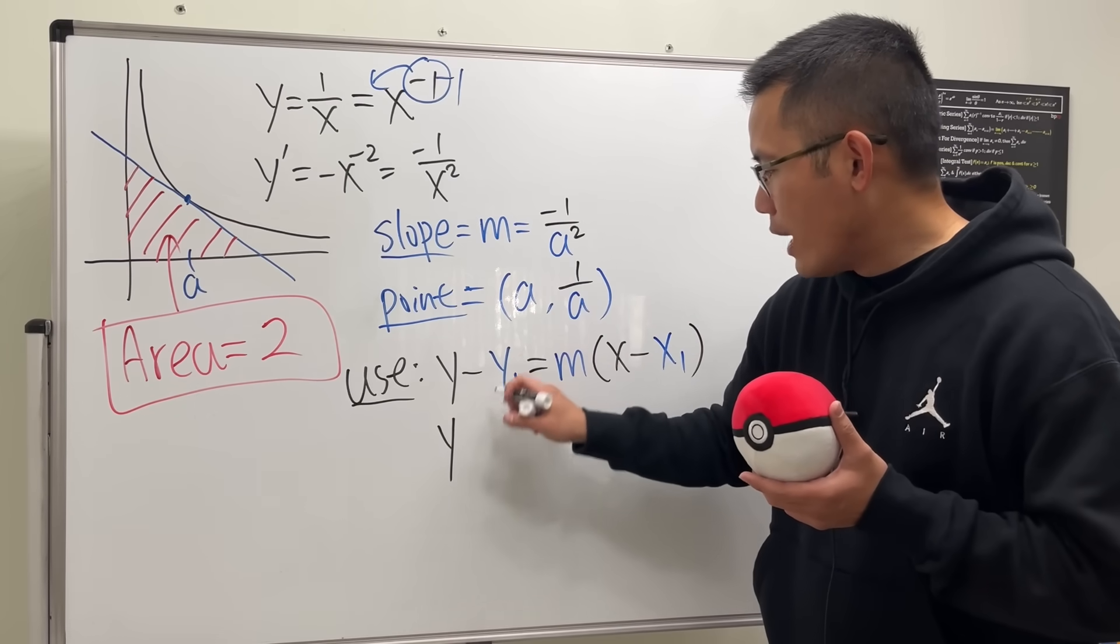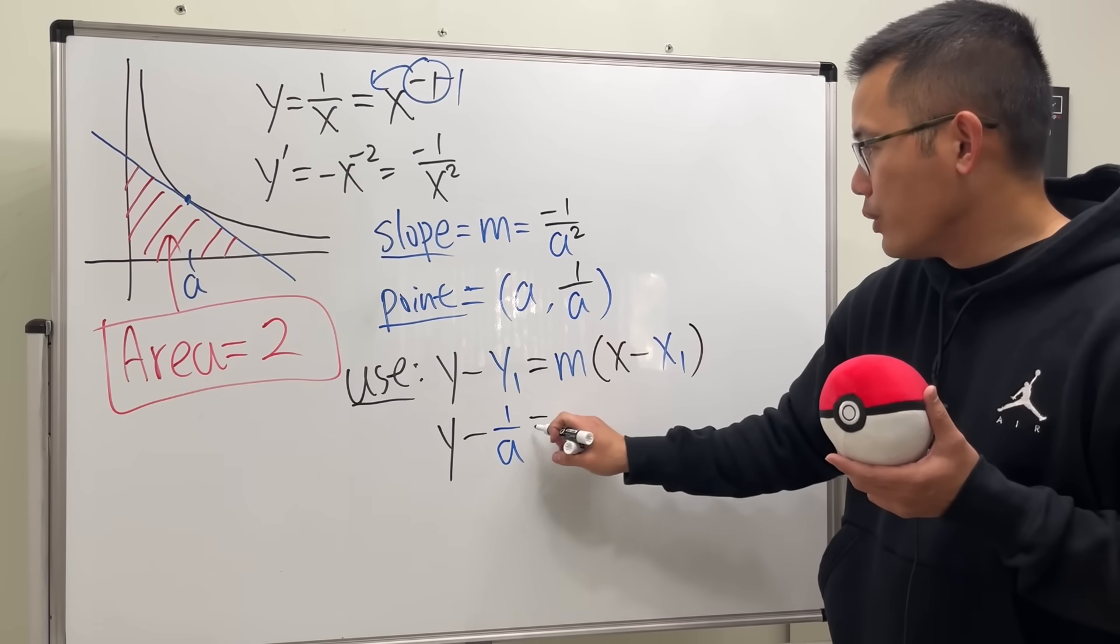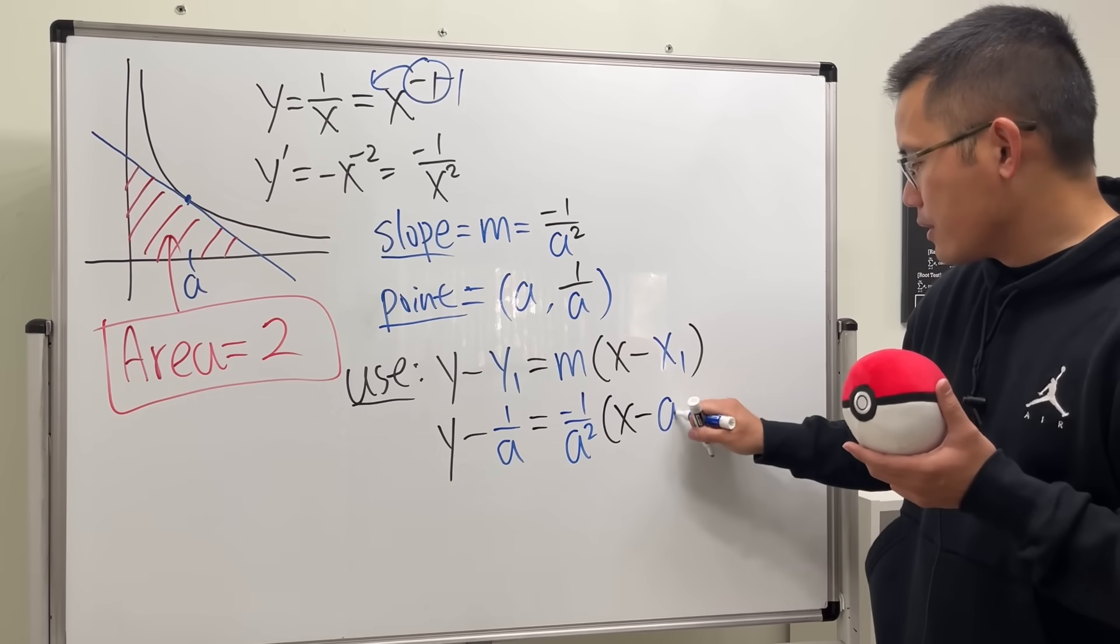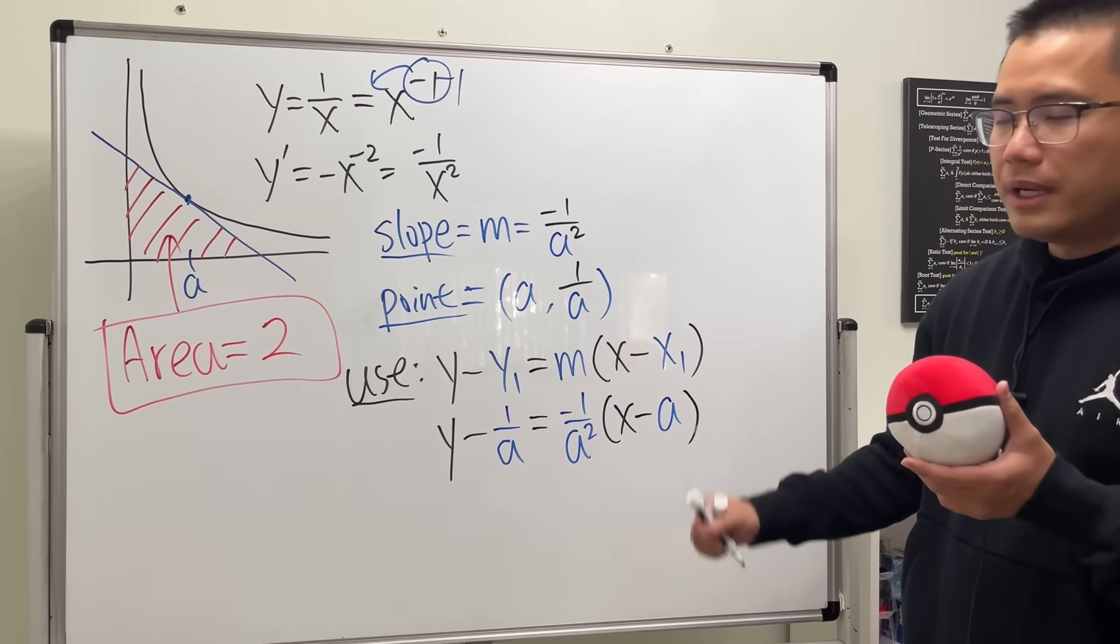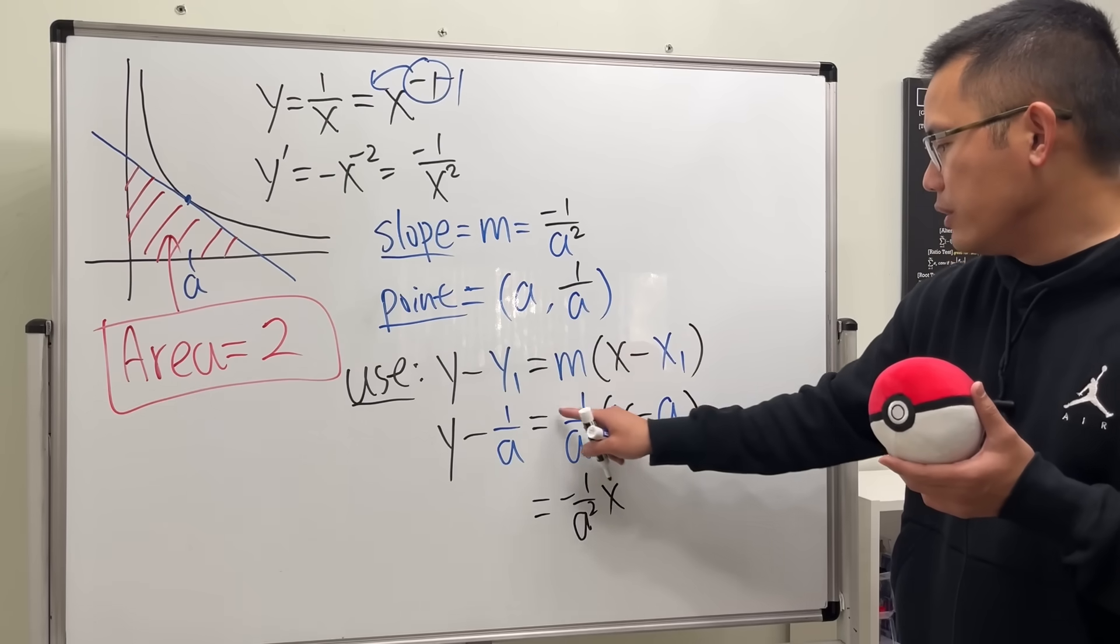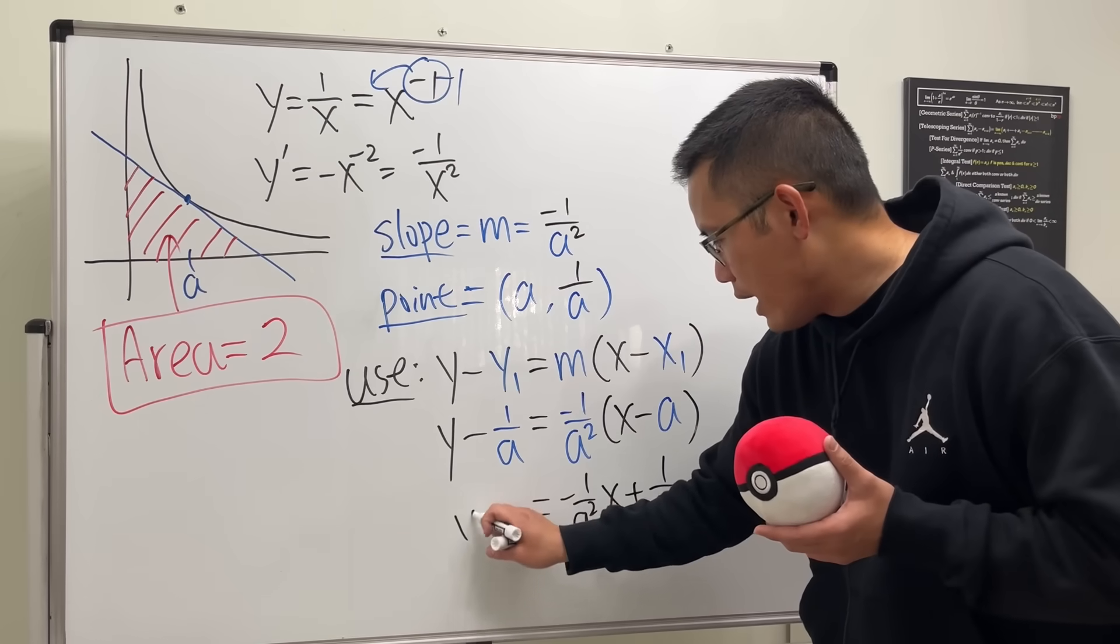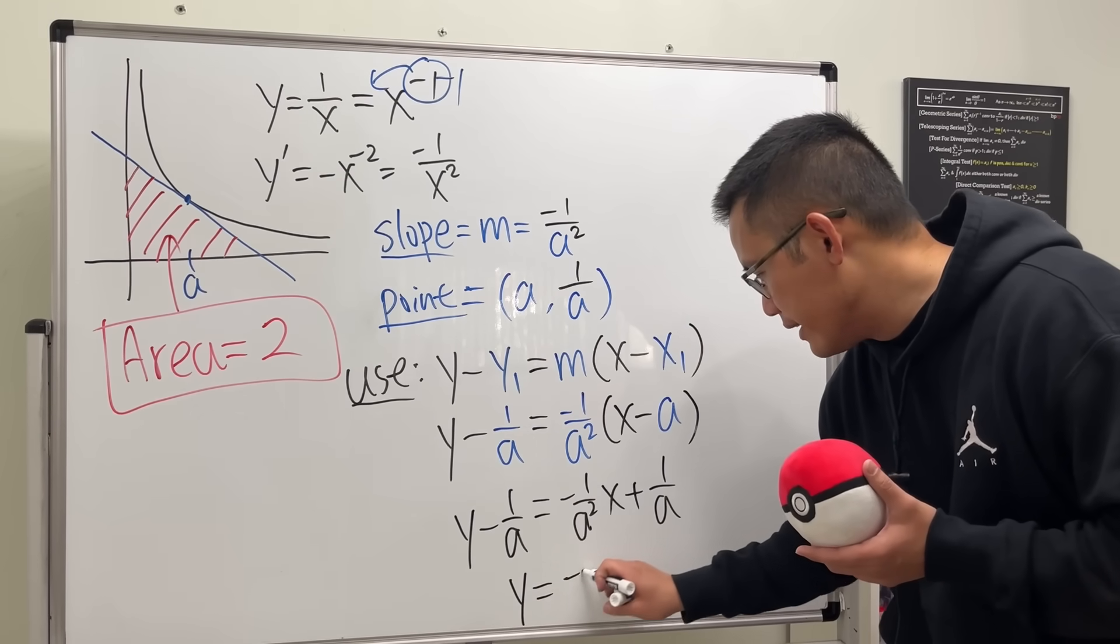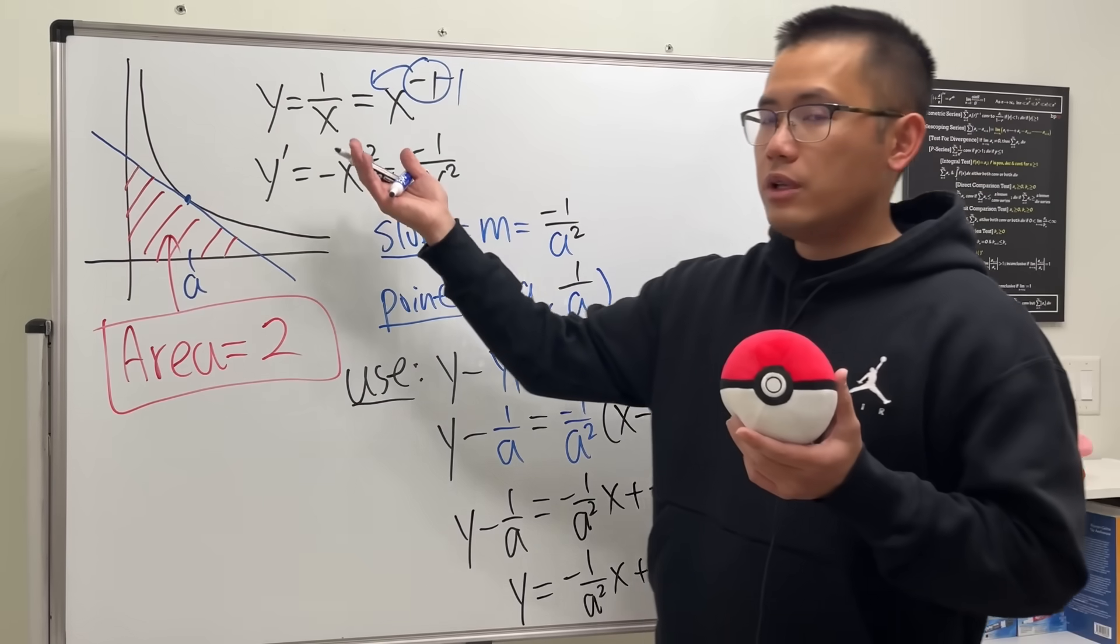Well, y is just y. y1 is this. So we have 1 over A. And then M is this. So we have this being equal to negative 1 over A squared times x minus x1, which is A. And now you can actually just find the x and y intercept from here. But perhaps I will clean this up a little bit. I'm going to multiply this out. So we get negative 1 over A squared times x. And the A and A will cancel. Negative times negative, we get the positive, and get 1 over A to the first power on the bottom. And then we have y minus 1 over A. Add the 1 over A on both sides. So we get y equals negative 1 over A squared x plus 2 over A. So in fact, that's the equation of the tangent line.